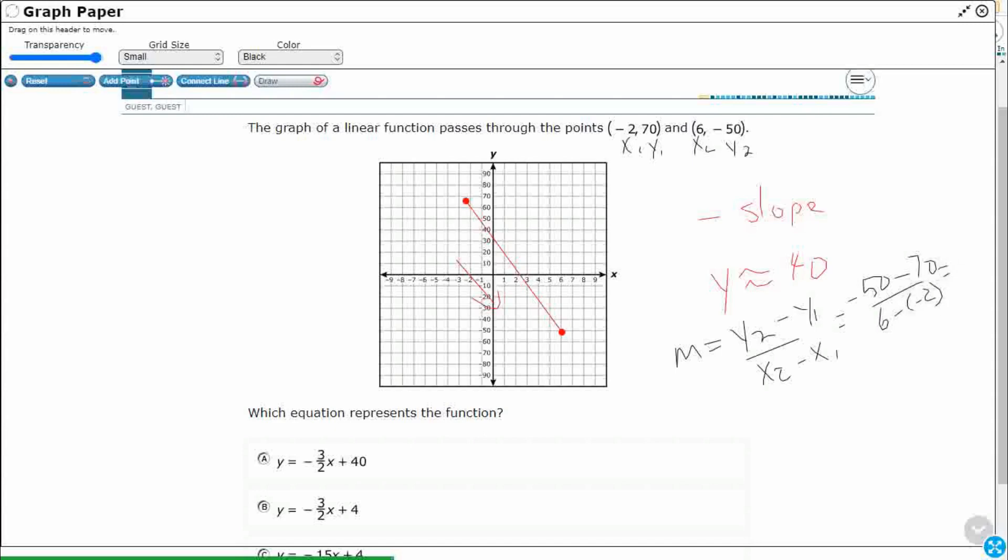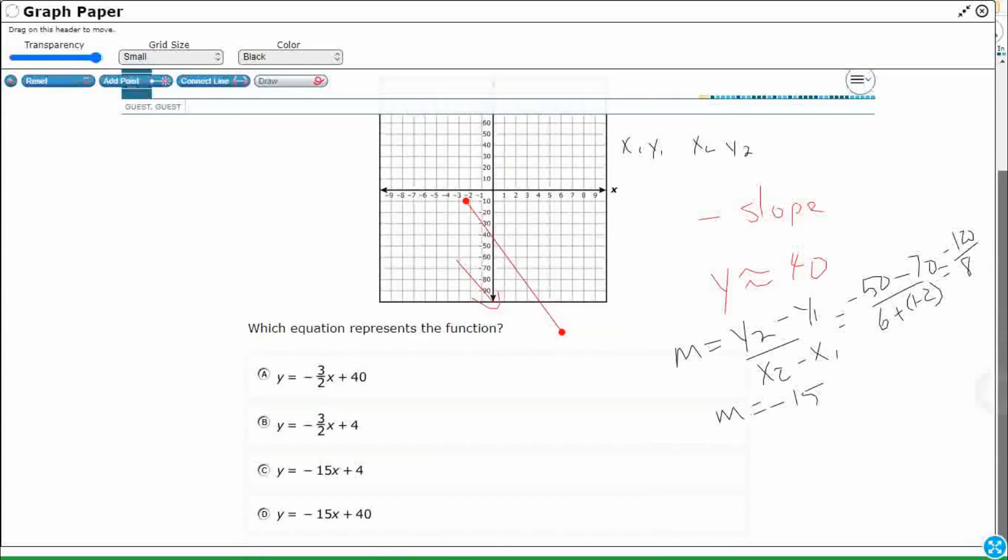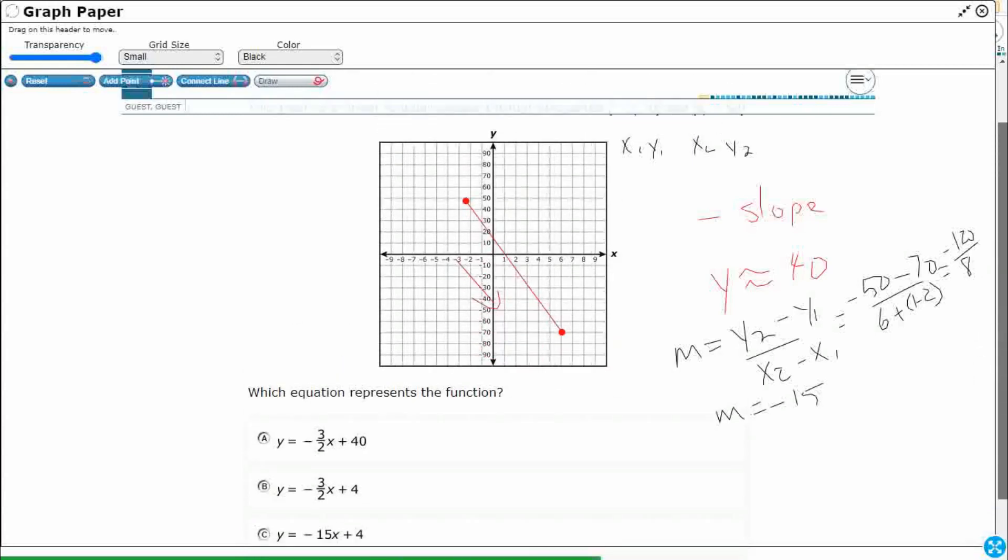So that's going to be negative 120. That's going to end up being a plus 8. So m is going to equal negative 15. And that does kind of line up with what we have down on D. So, D is looking pretty good right now.